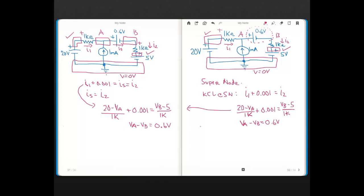So, in either case, you get the same simultaneous equations to solve. So if you go ahead and solve this, VA will come out to 13.3 volts, and that means VB is 0.6 volts less than that, so 12.7 volts.